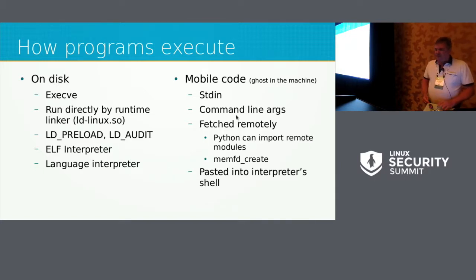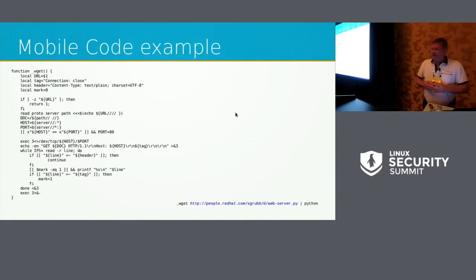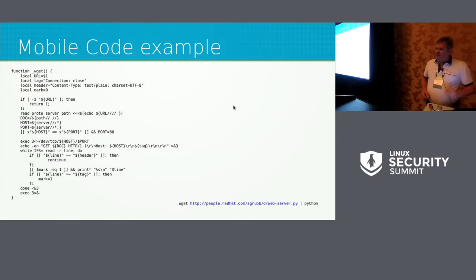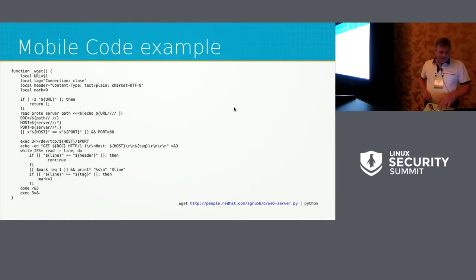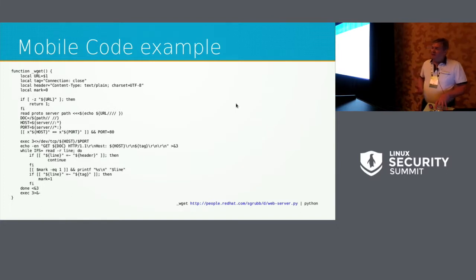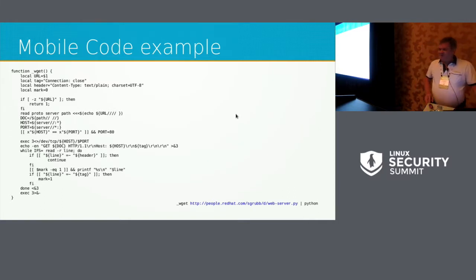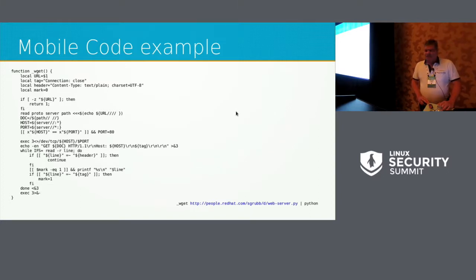Another vector: you can paste a program straight into the shell. Here's an example of some of this mobile code. This is a function written in Bash that is functionally equivalent to the wget command, but it's entirely in Bash — because somewhere along the line somebody decided it was a good idea to have Bash do TCP/IP. It can also do just IP. This is a white hat talk, but we can do black hat for a little while.